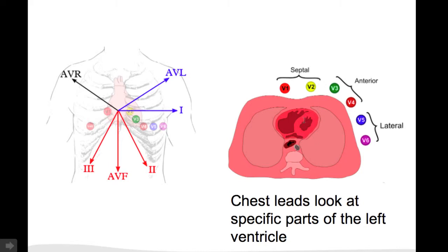V1 and V2 are closest to the septal parts of the left heart chamber. V3 and V4 to the anterior parts of the left ventricle, and V5 and V6 to the lateral parts.